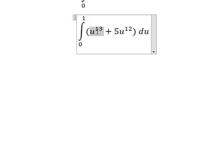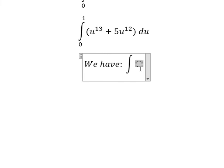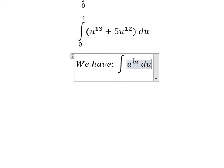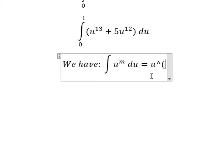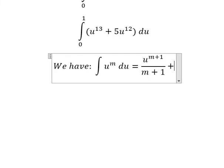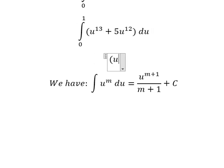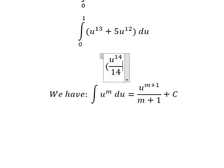To integrate this, we use the power rule formula: the integral of u to the power m equals u to the power of m plus 1 over m plus 1 plus c. Applying this, we get u to the power 14 over 14 plus 5u to the power 13 over 13.